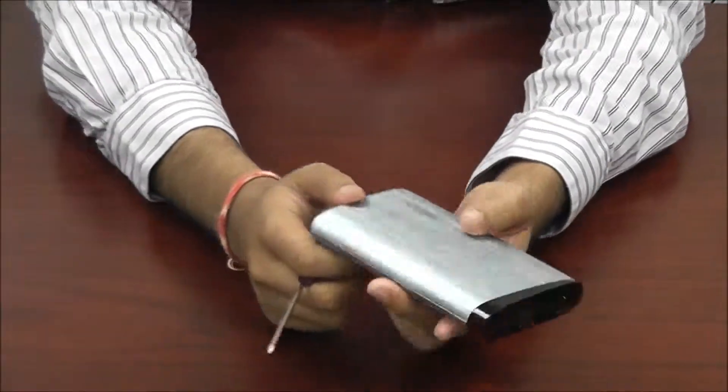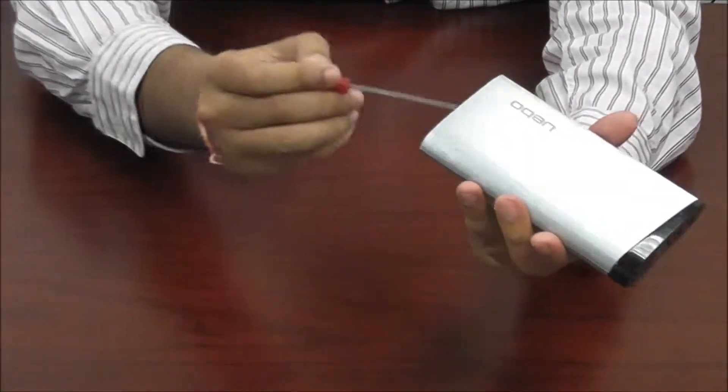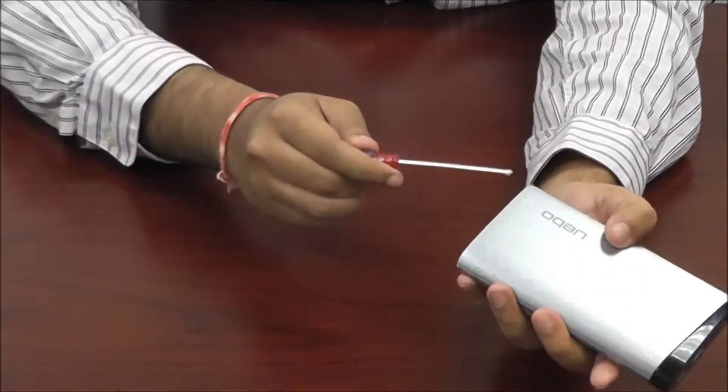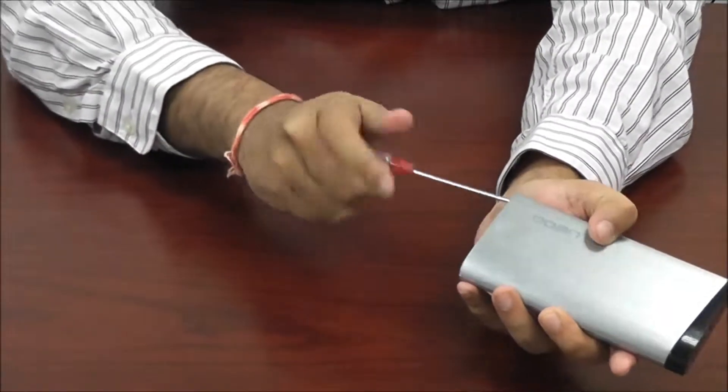First thing you'll need to do before you get started installing the hard drive is unscrew each screw from the front and back panel. So let's get started on that right now.